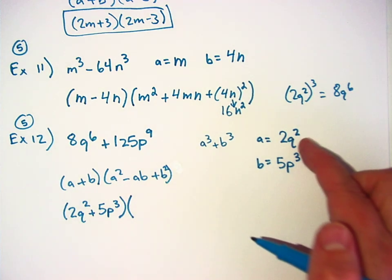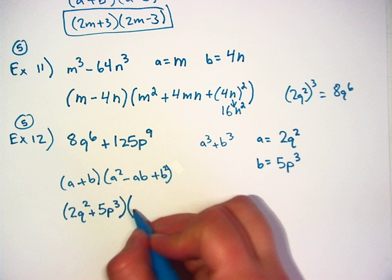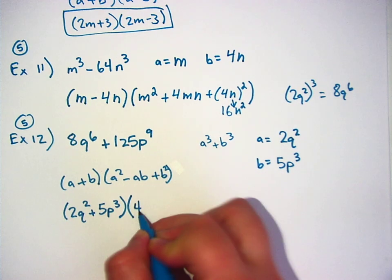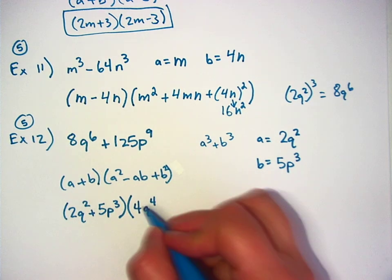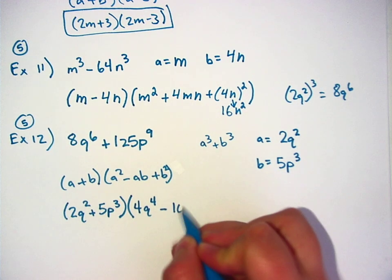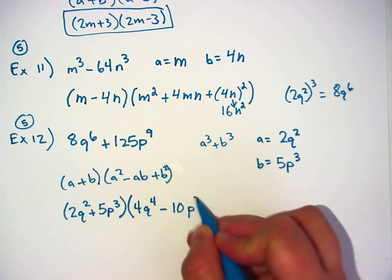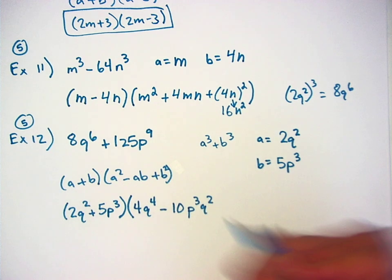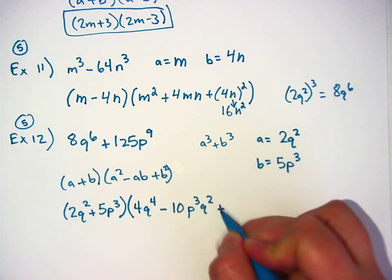What's A squared? 4Q to the fourth minus, I have to multiply these together, that would be 10P to the third Q squared plus B squared.